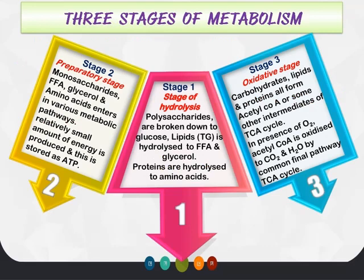The food that we eat ultimately needs to be metabolized in order to be utilized. This process of metabolism consists of three stages. The first stage is called the stage of hydrolysis, where large food components are broken down into their simplest form — carbohydrates into glucose, lipids into fatty acids and glycerol, and proteins into amino acids.